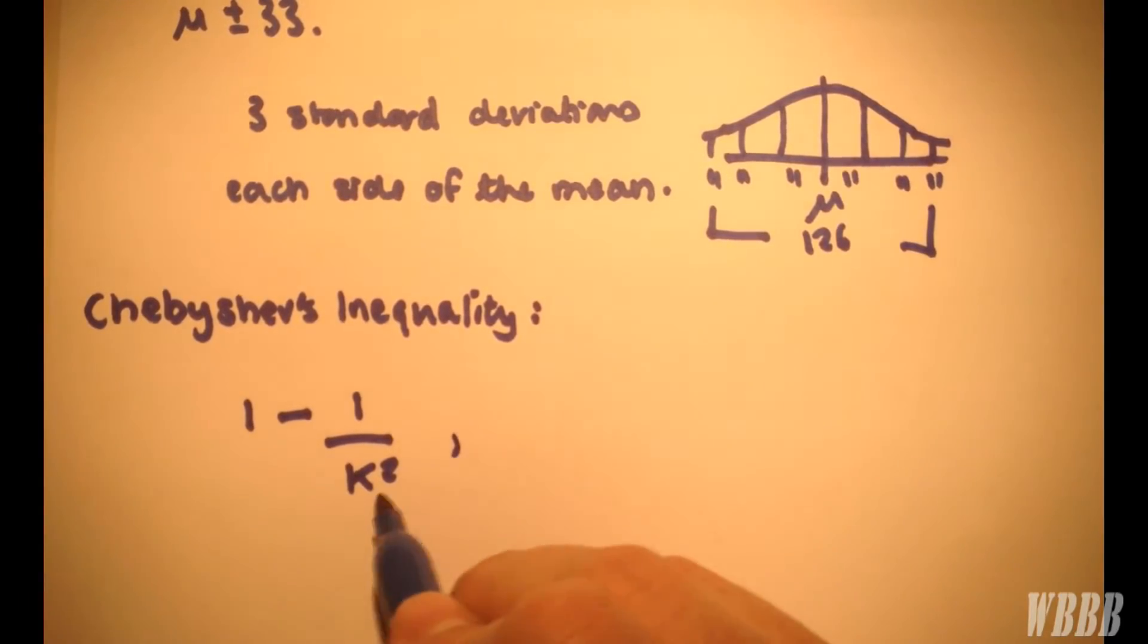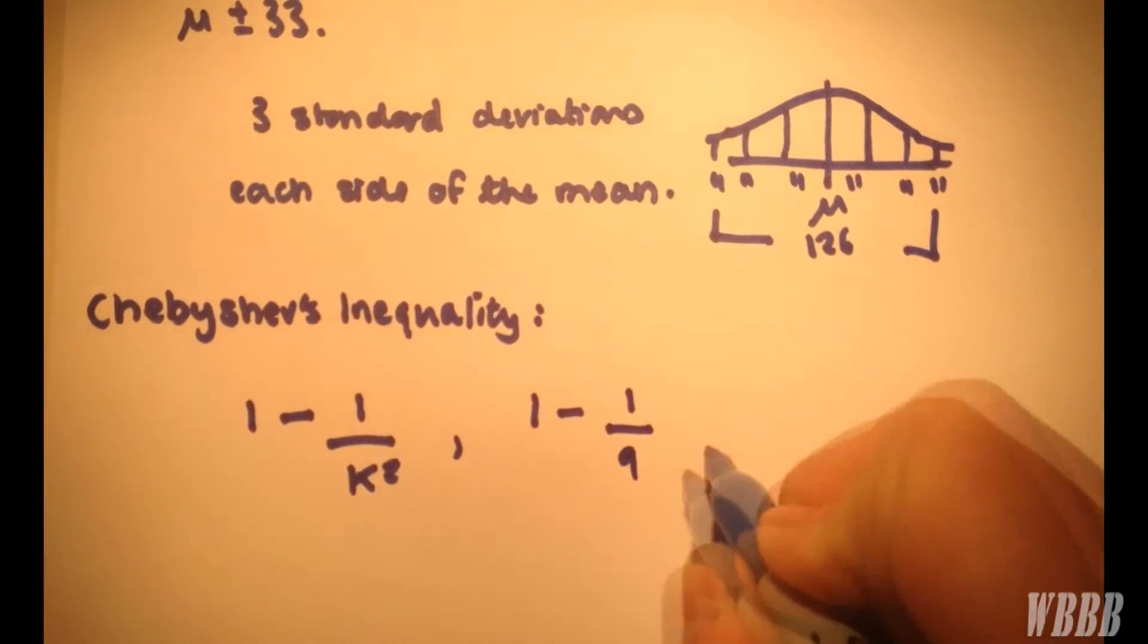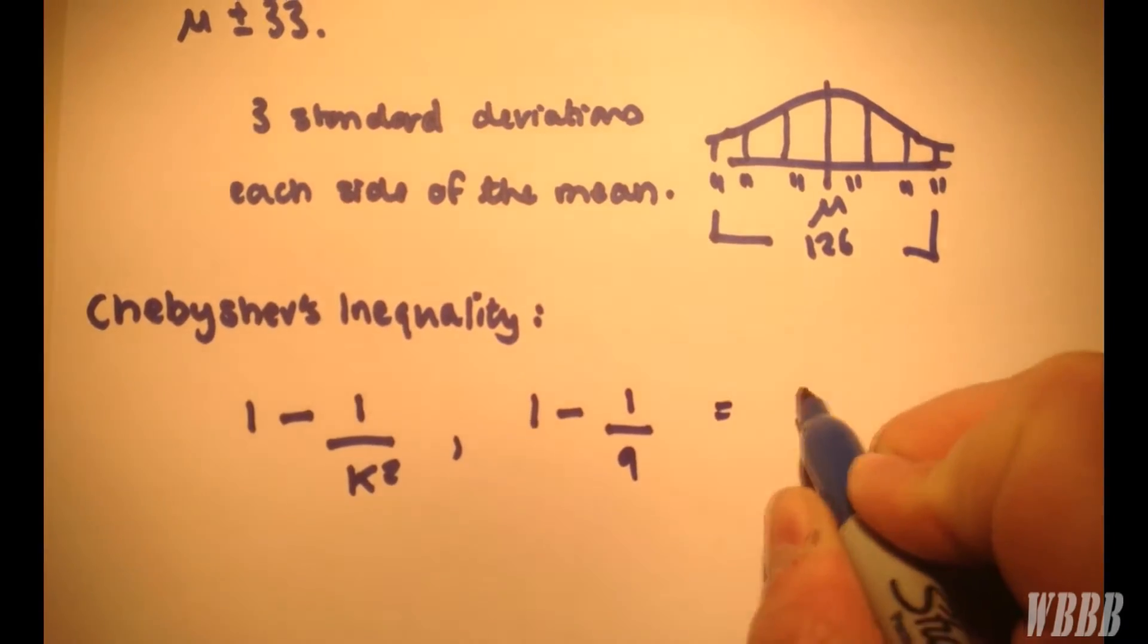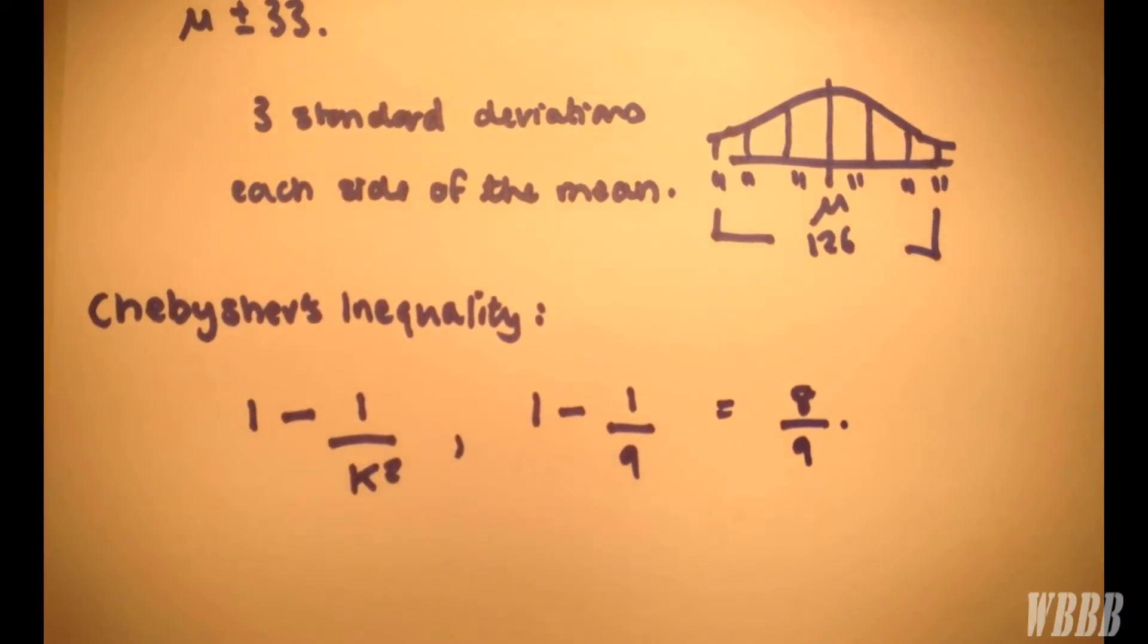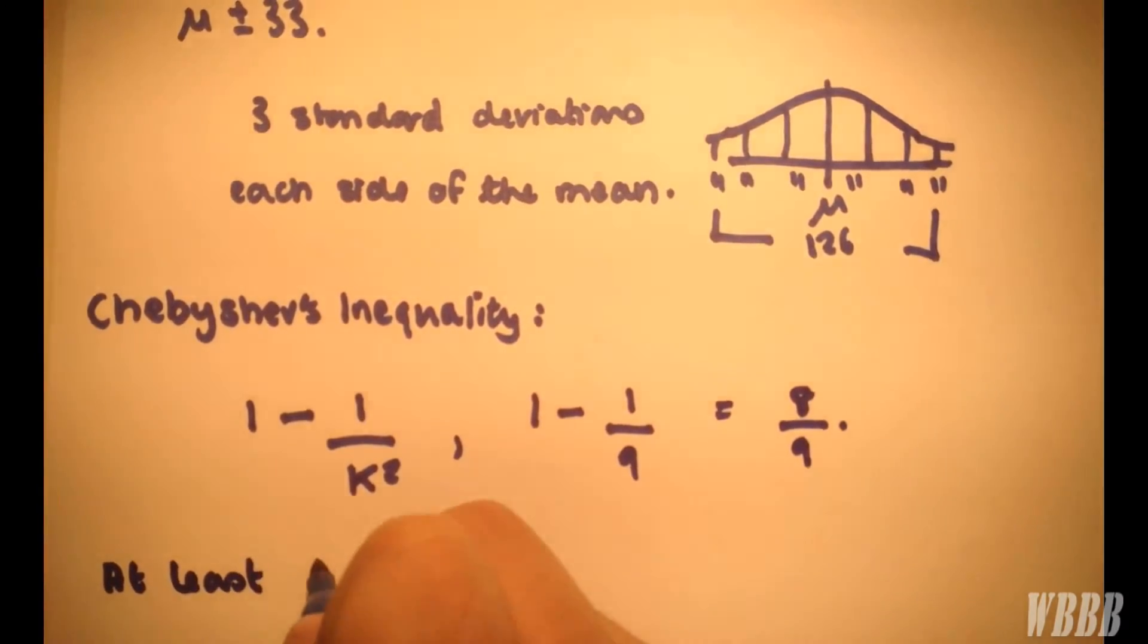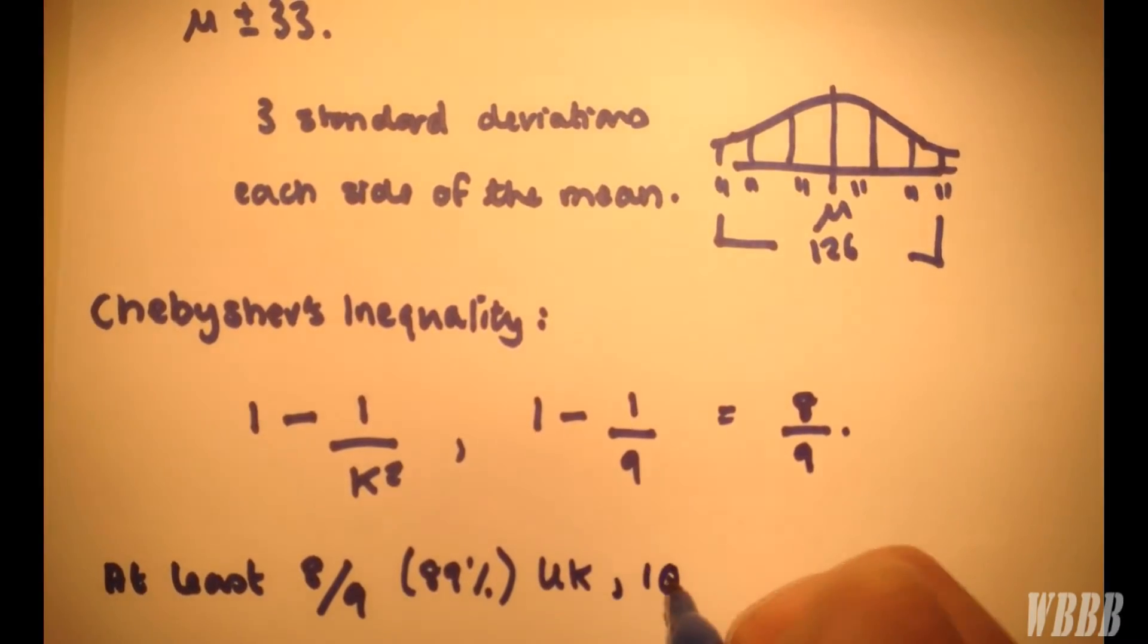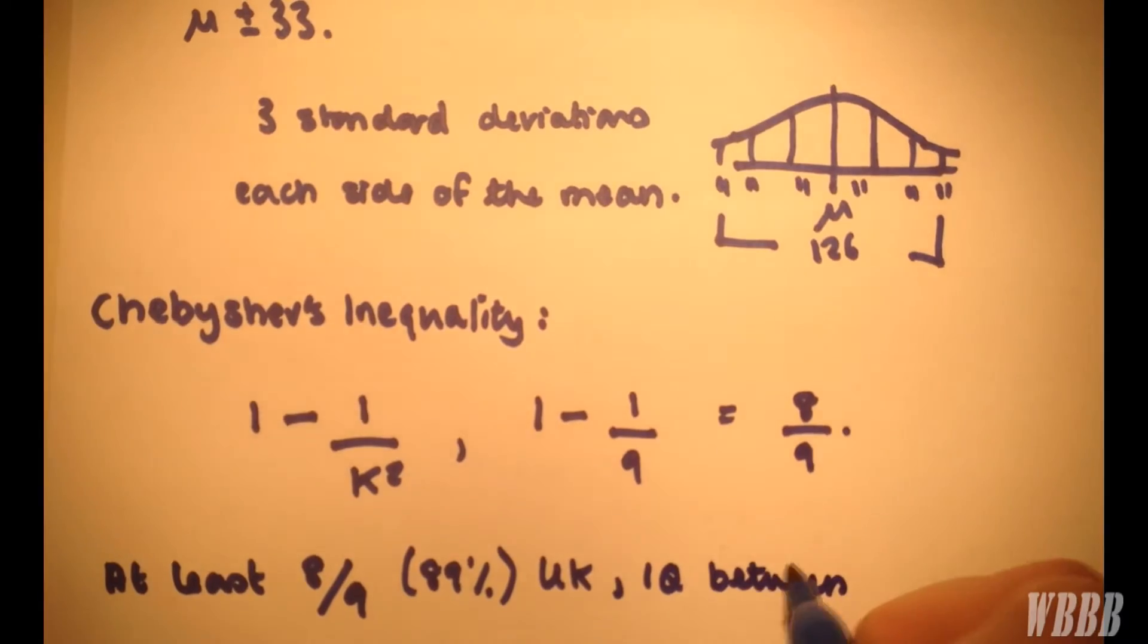So in this case, we have k equals 3, so we have 1 minus 1 over 3 squared, which is 9. So of course this gives 8 over 9. So it's literally as simple as saying at least 8 over 9, which is roughly 89% UK citizens have an IQ between 93 and 159.